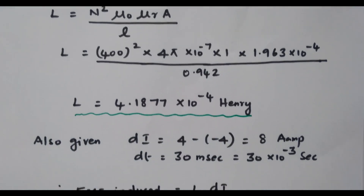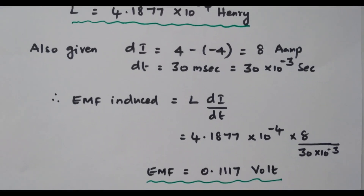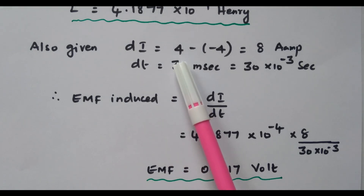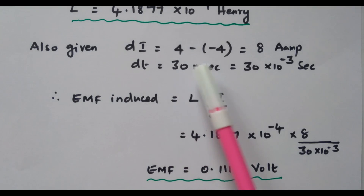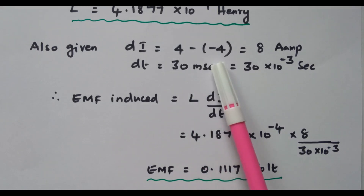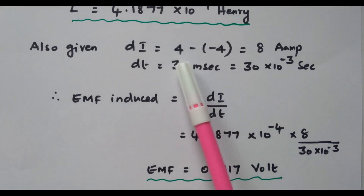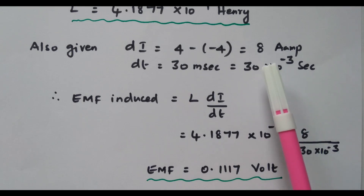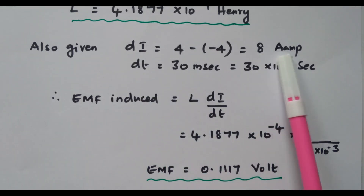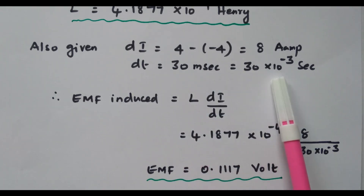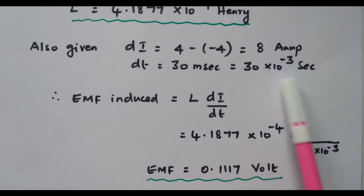Our aim is to find the EMF induced. The current is given as 4 ampere, then reversed. So the current changes from plus 4 to minus 4 ampere. The difference is 4 − (−4) = 8 ampere. The time is given as 30 milliseconds = 30 × 10⁻³ seconds.